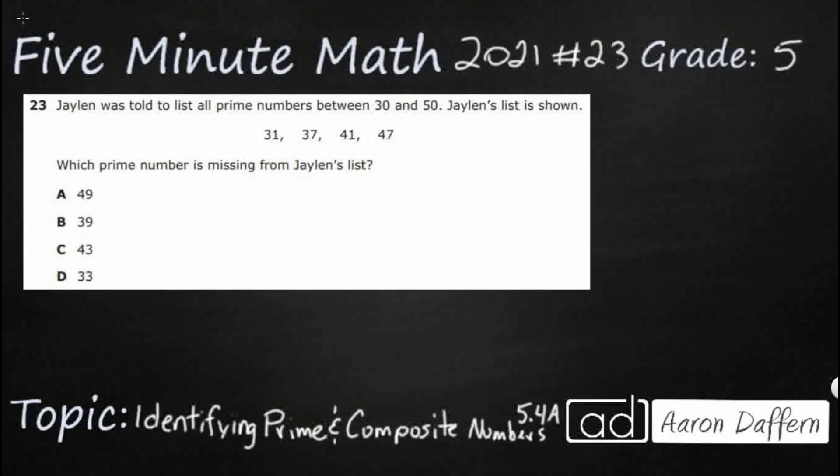Hello, and welcome to 5-Minute Math. Today we are looking at the 5th grade concept of identifying prime and composite numbers. This is standard 5.4a in the great state of Texas, and we are using item number 23 off the 2021 released STAAR test.